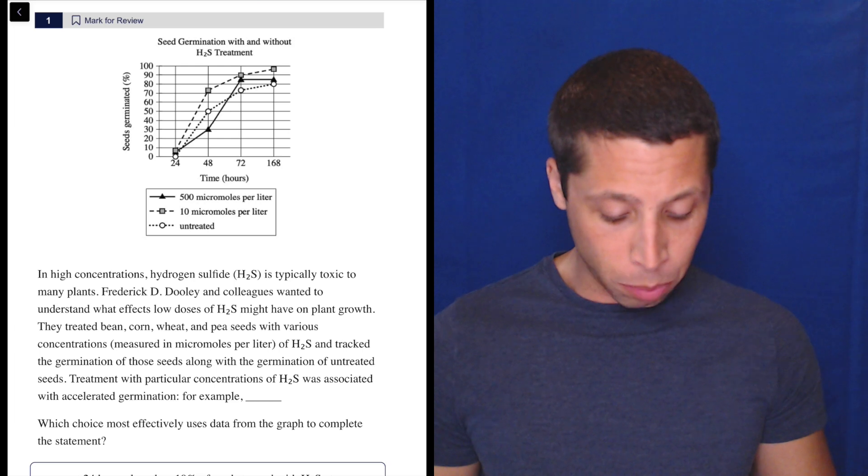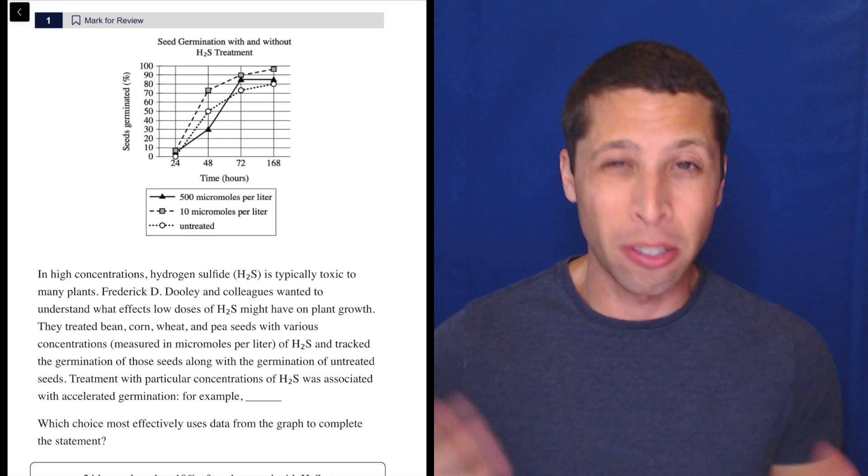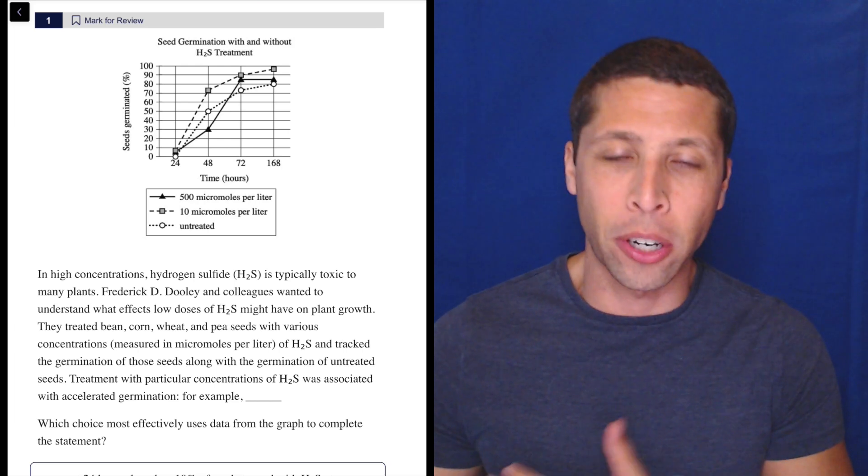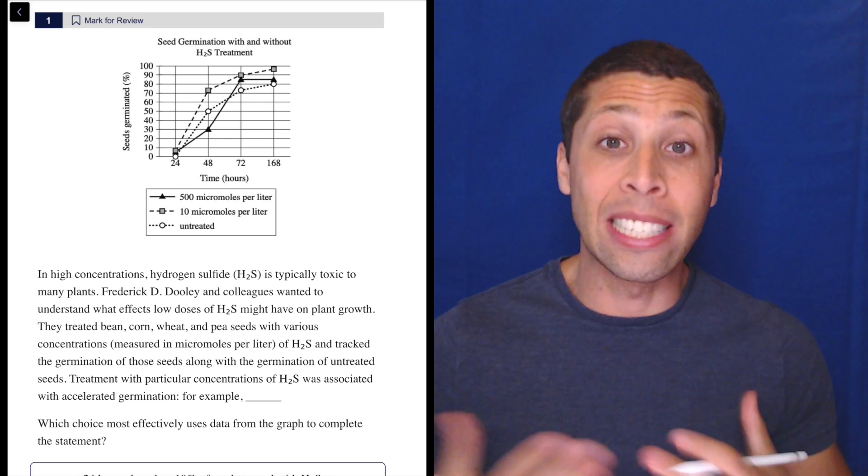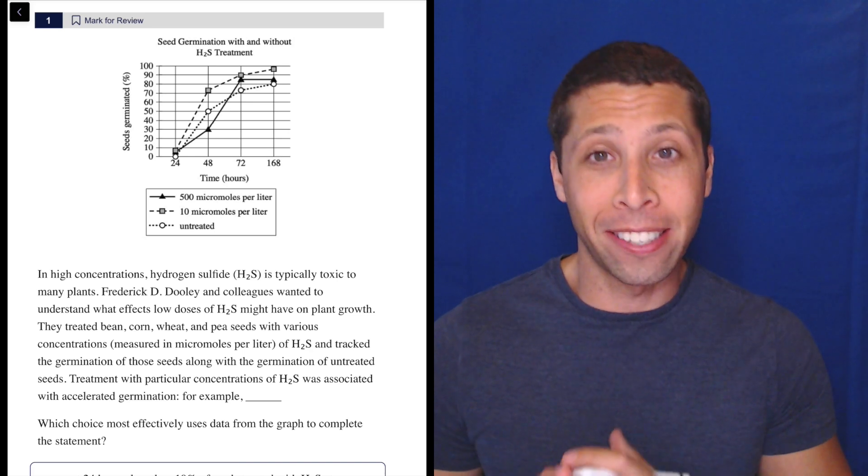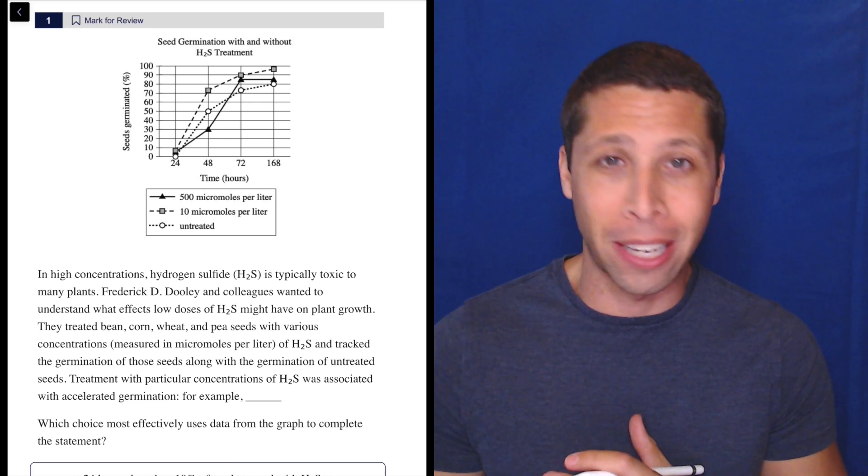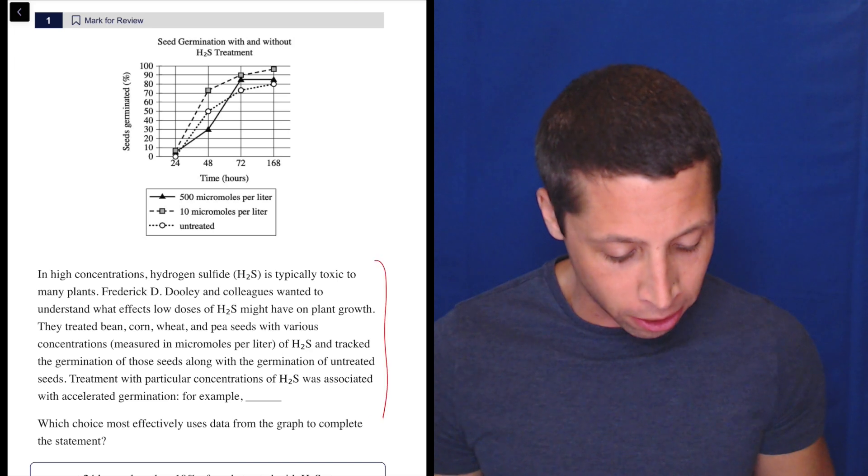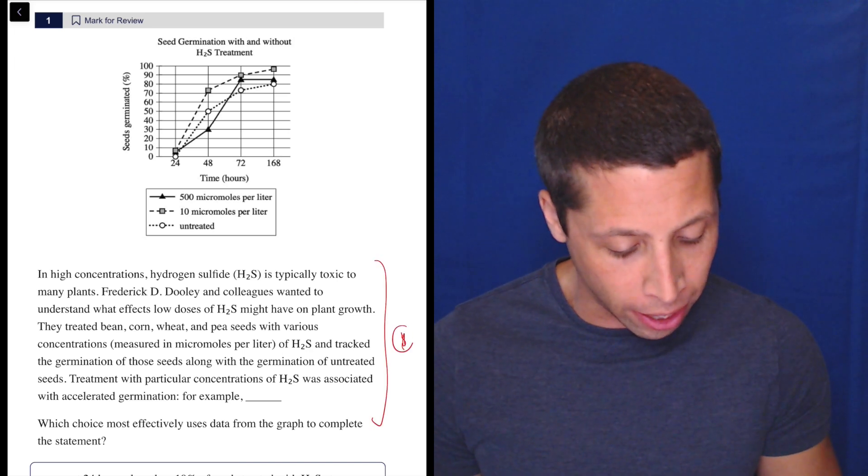So the question is pretty straightforward. Which choice most effectively uses data from the graph to complete the statements? This is basically like there's some main idea that they're going to get across. So let's see if we can get a dumb version of that main idea that separates the science, separates all the complexity of the graph. So we're focusing first here.